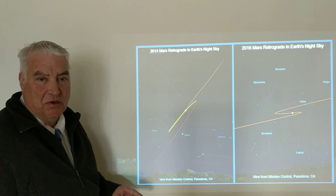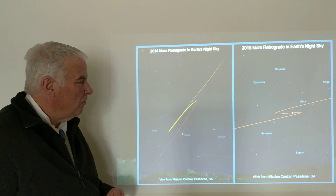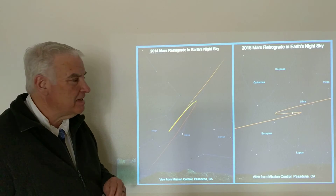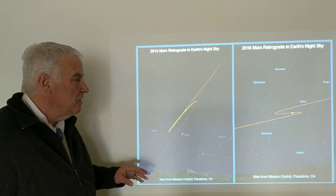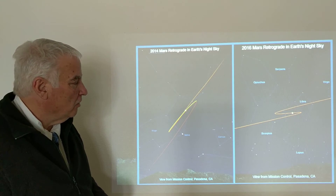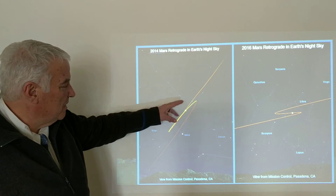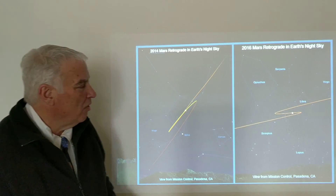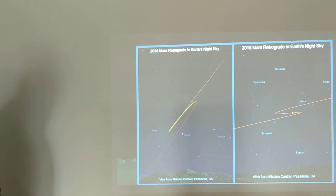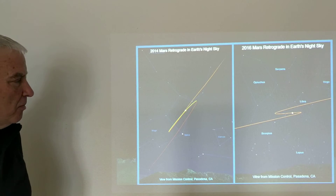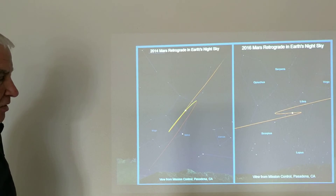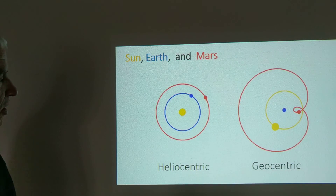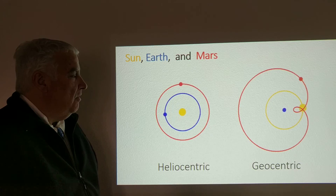Because the orbits are inclined with respect to each other a little bit — they're not all exactly in the same plane — this motion sometimes looks a little different. Sometimes we see a looping motion and other times more of a zigzag motion, but whenever the movement of a planet is backwards we call that retrograde motion.